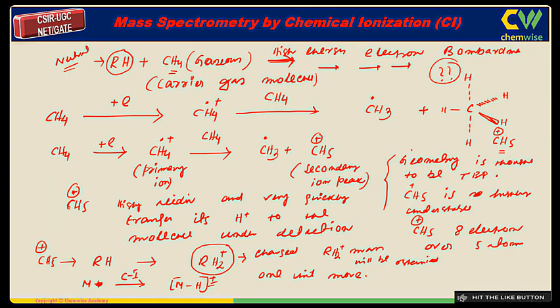And this is highly subtle species. Its geometry is TBP. So if the question is asked which transient species is going to transfer proton to RH, the answer will be CH5 plus. Now you know that this is not a mistake. The truth is that the CH5 plus is going to transfer the proton to the molecule under detection. So now we have covered two methods. One is the EI method with electron impact.